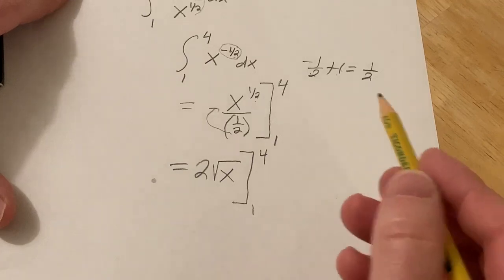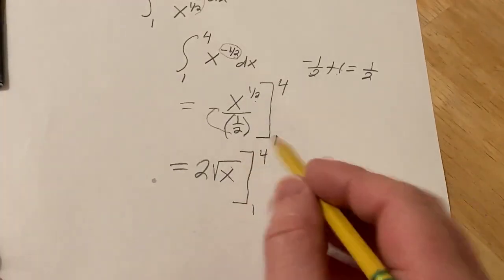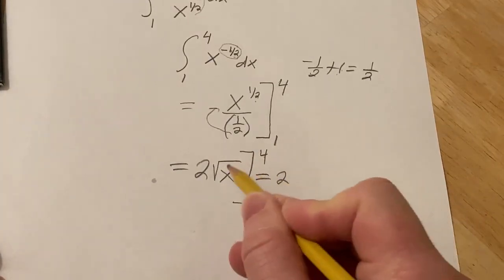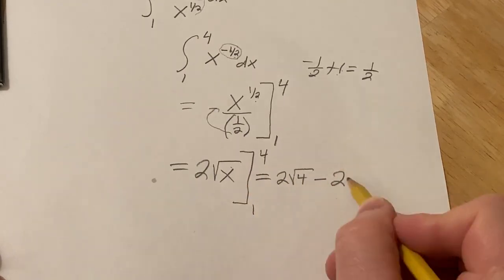Alright, very good. And the rule now says that first you plug in the 4, then you subtract, then you plug in the 1. So this is 2, plug in the 4, subtract 2, plug in the 1.